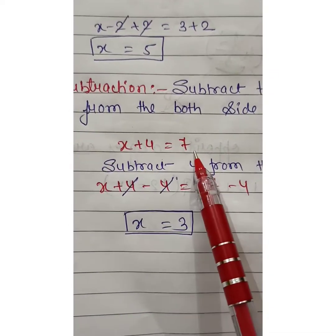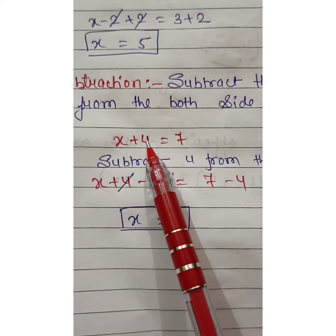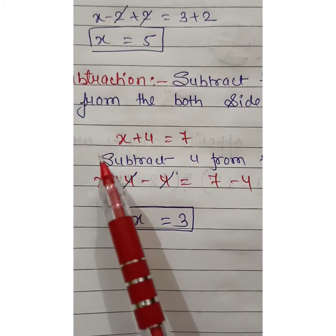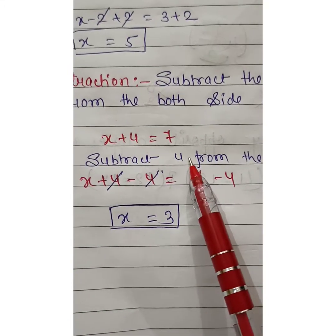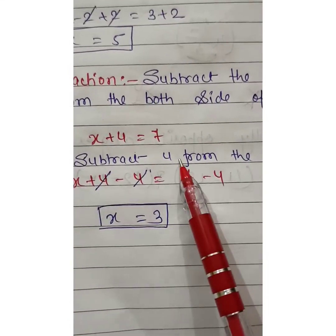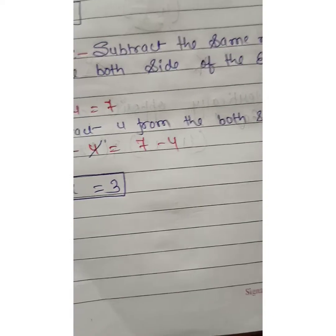See x plus 4 equals 7. When it's plus 4, we subtract the opposite number. Plus 4 ka opposite is minus 4. So subtract 4 from both sides of the equation.